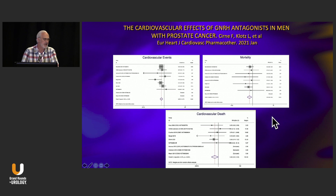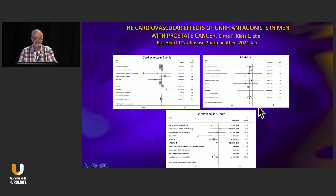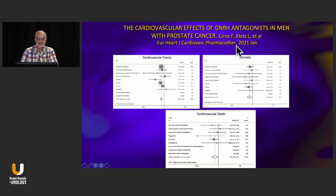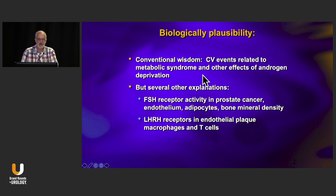The final point is the agonist versus antagonist issue. The evidence from pooled analyses, including one I did with Peter Albertson, demonstrated a 50% reduction in cardiovascular events in men with pre-existing cardiovascular disease on degarelix compared to an LHRH agonist. This has now been repeated in numerous prospective trials. A meta-analysis just published by collaborators and myself shows convincingly a benefit in cardiovascular events, overall mortality, and cardiovascular death with degarelix compared to LHRH agonists.